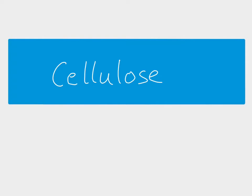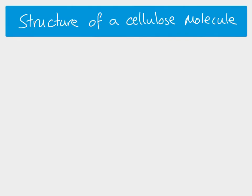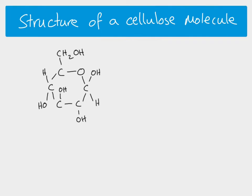In this video we're looking at the polysaccharide cellulose. Cellulose is made up of beta glucose molecules. The important thing about a beta glucose molecule is that the hydroxyl group on carbon one is situated above the ring, as opposed to an alpha glucose molecule where it would be below the ring.